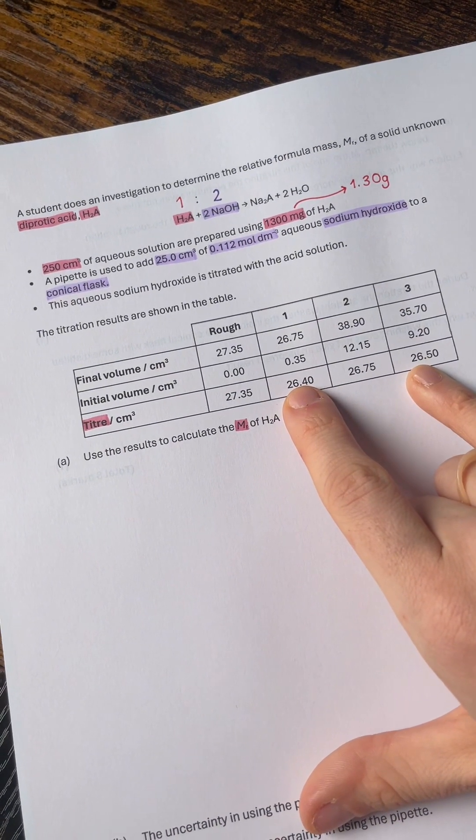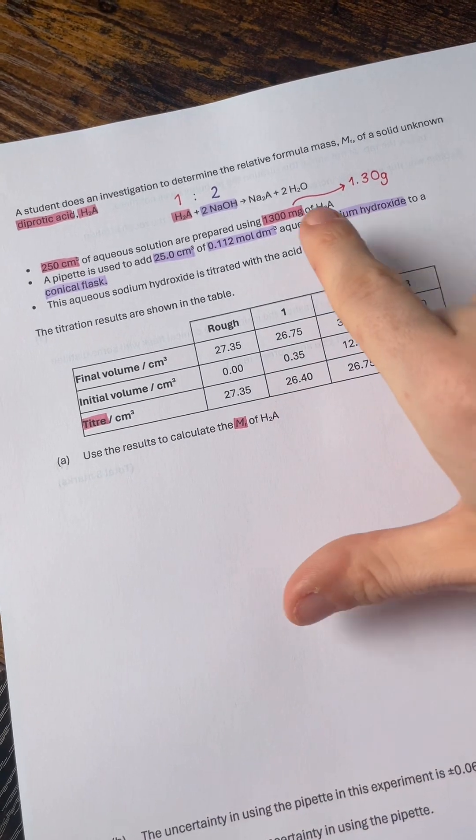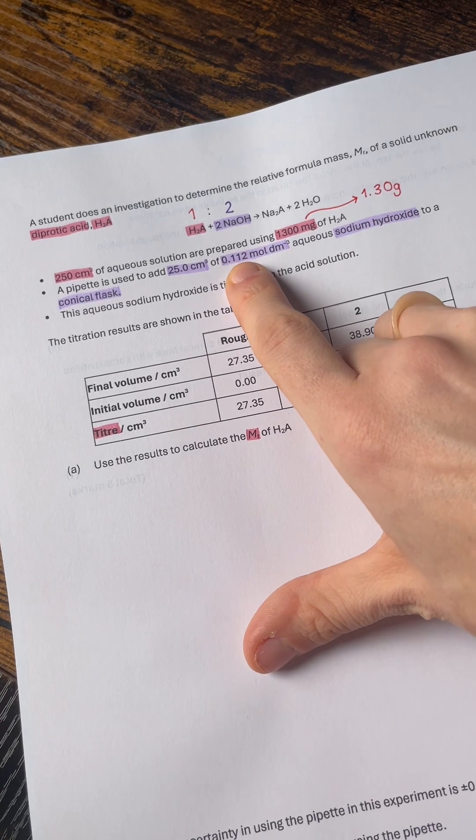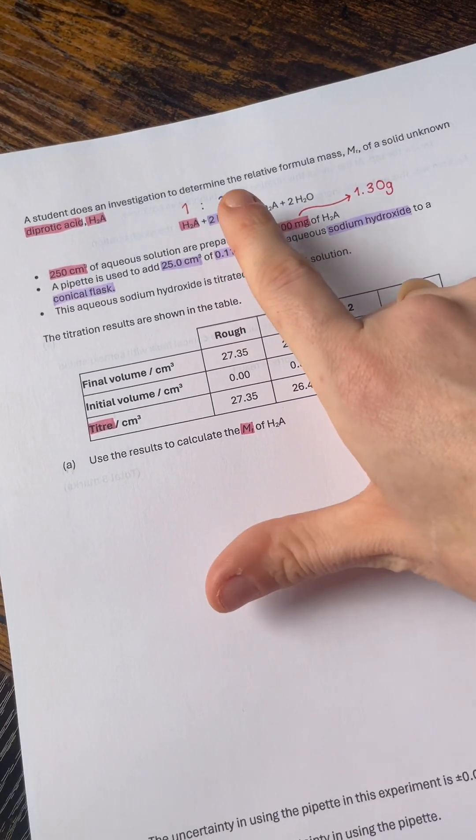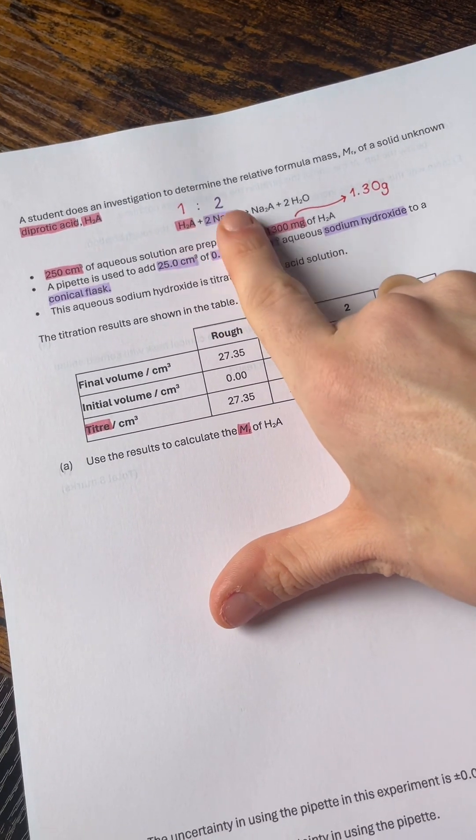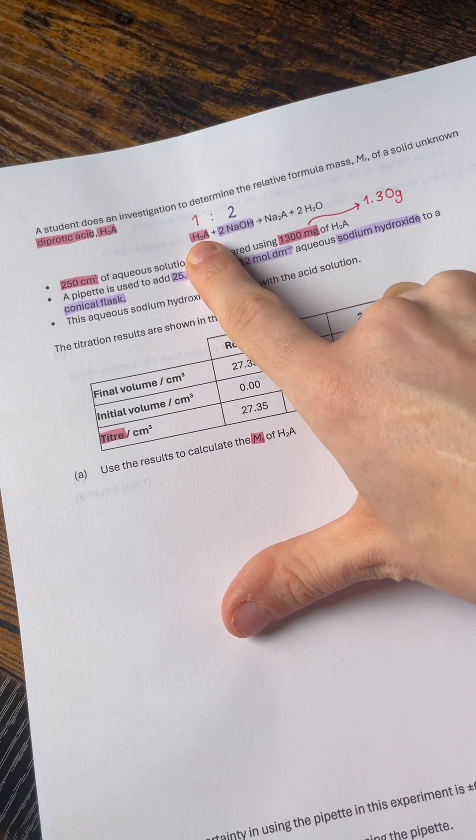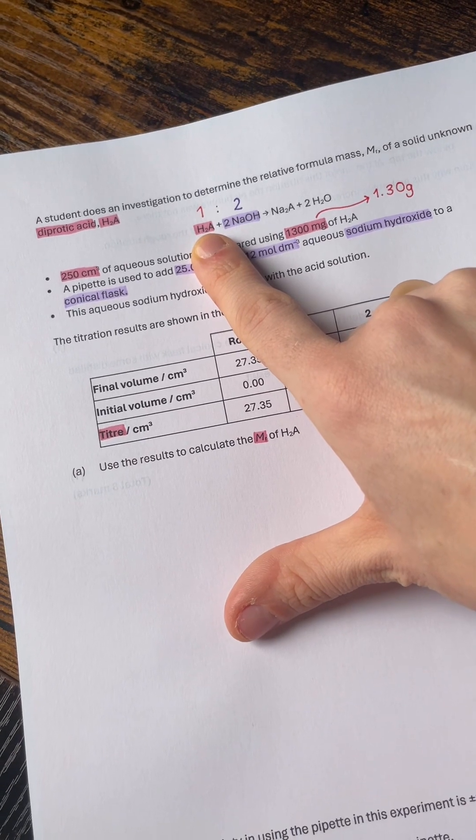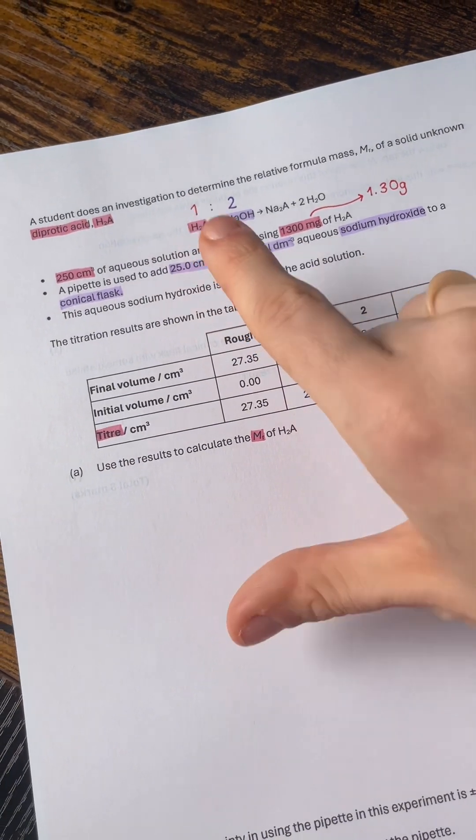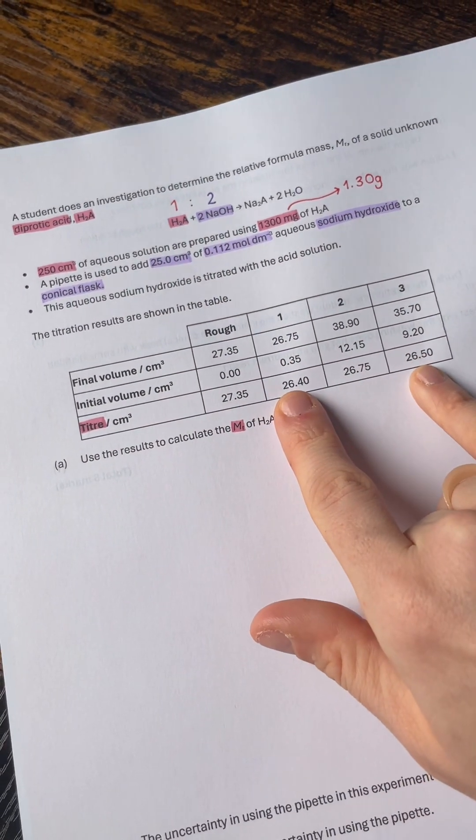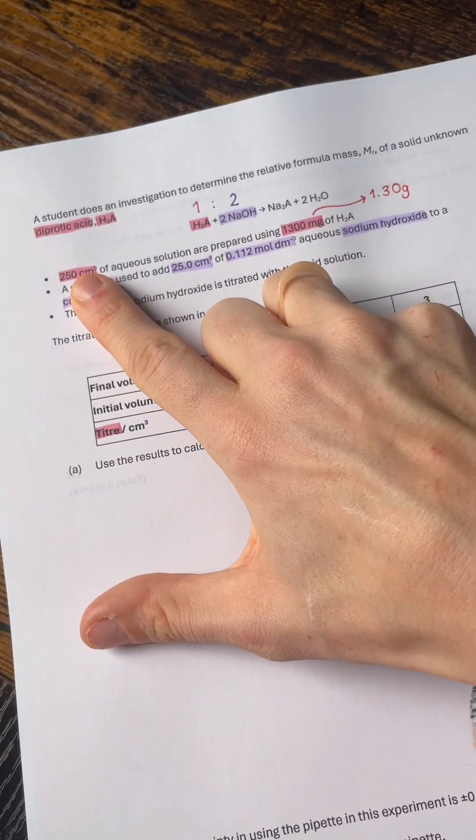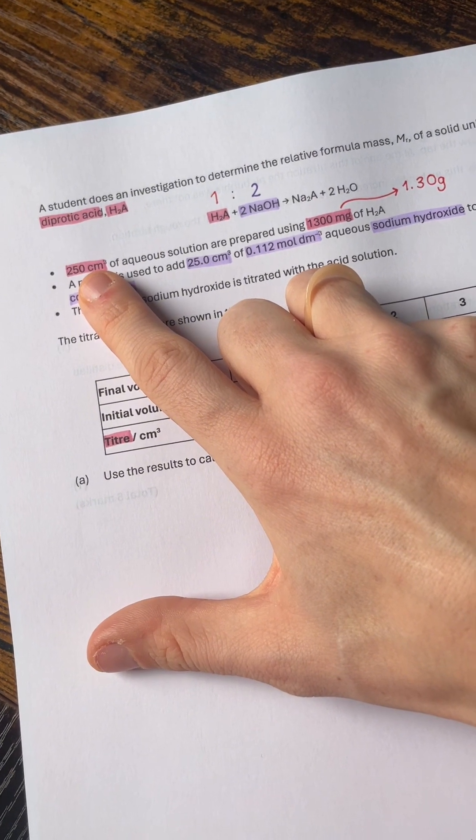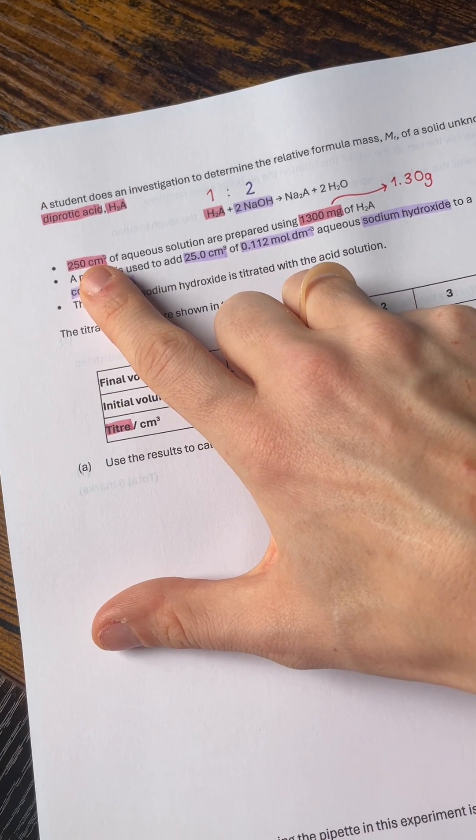We're then going to work out the moles of what we can, which in this case is the sodium hydroxide because we have the volume and the concentration. Then you would always use the balanced chemical equation to get the moles of the substance you want to find something out about, which for us is the H2A. That will tell us the moles in our mean titer volume. We then need to scale that up to get the moles in the 250 cm³ that we originally prepared. Those steps will always be the same.